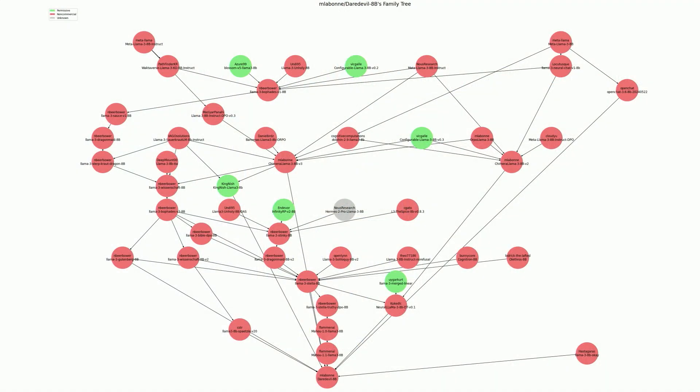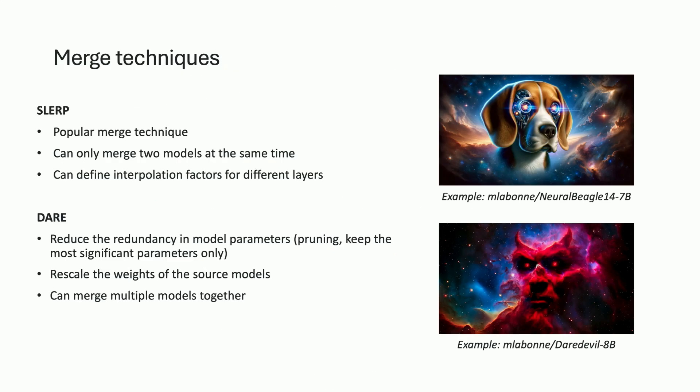Here you can see the family tree of merged models — every node is actually a model, and we merge different merges together until it becomes a giant family tree. This one is actually quite small; it can get a lot crazier than that. The first merge technique I want to mention is called SLERP — Spherical Linear Interpolation — where the idea is to apply a spherical linear interpolation on the weights of different models. You can only merge two models at a time with this technique, but you can tweak it with different interpolation factors for different layers.